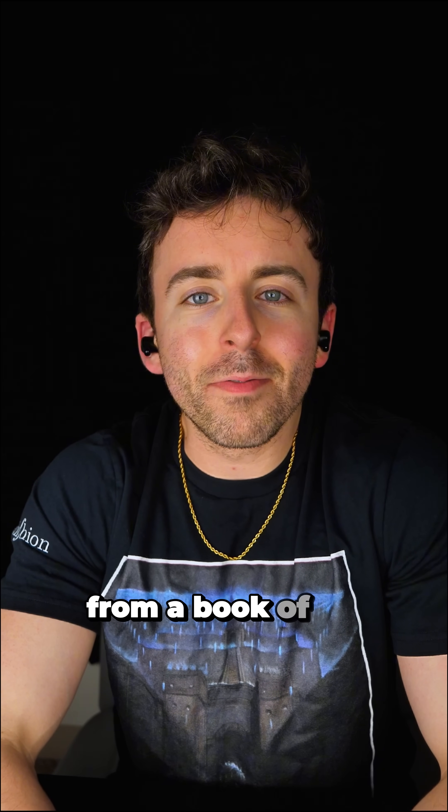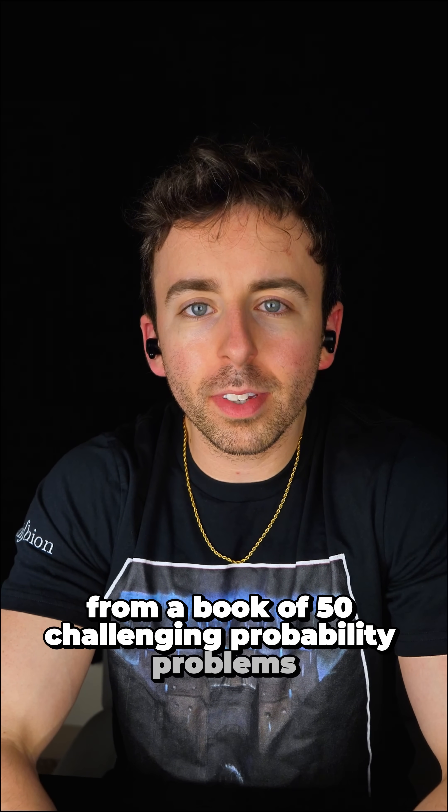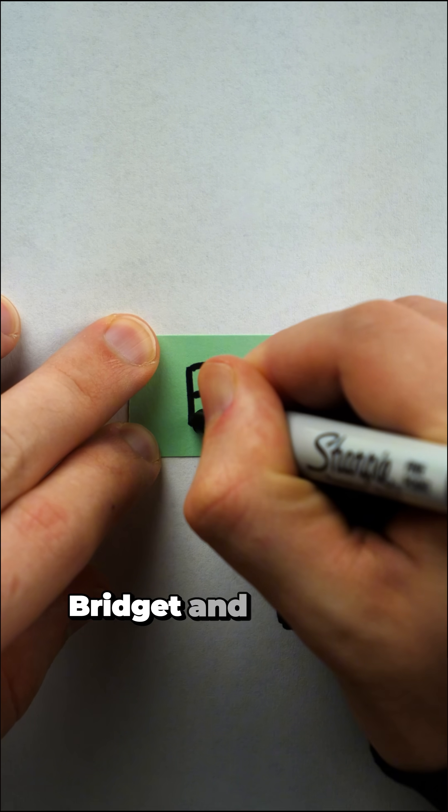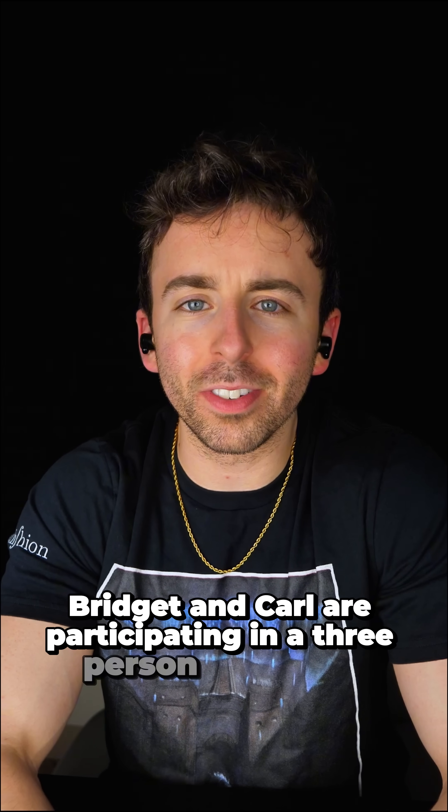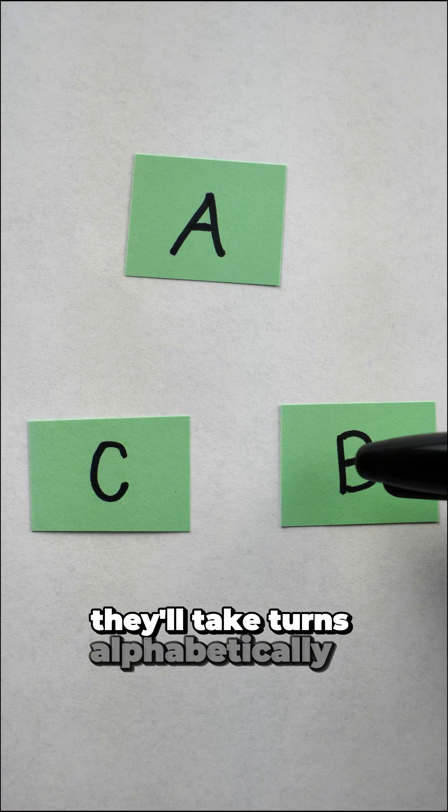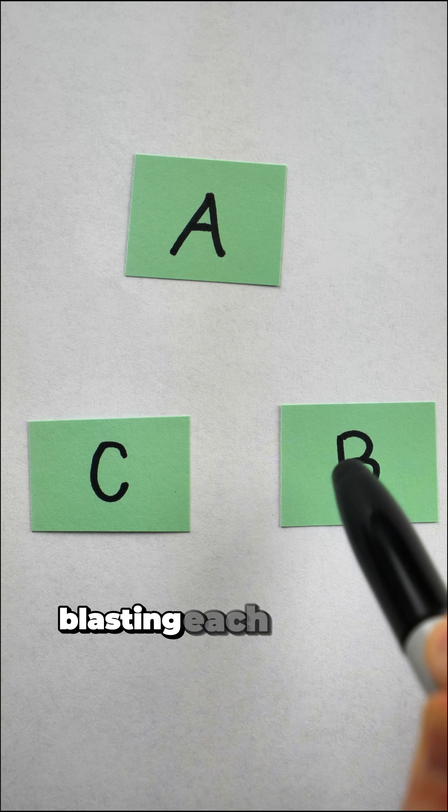Here's an interesting problem from a book of 50 challenging probability problems. Three gunslingers, Alex, Bridget, and Carl, are participating in a three-person pistol duel. They'll take turns alphabetically A, B, C, blasting each other.